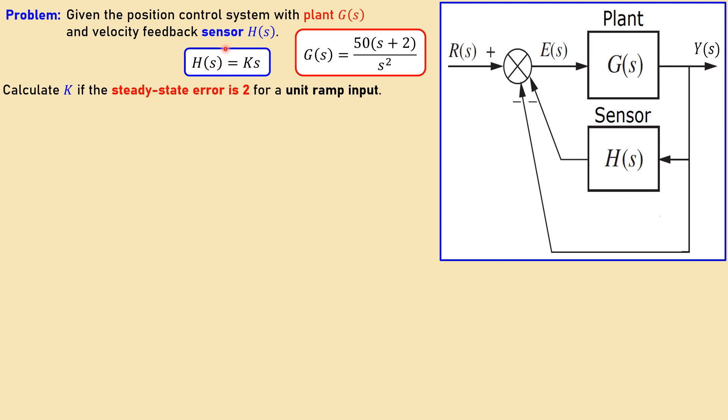In this case H is the sensor shown here, and that is the velocity feedback. And this wire is just the position fed back to the summation point directly, which is the position feedback.